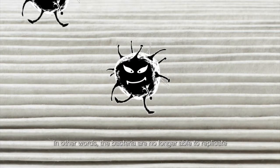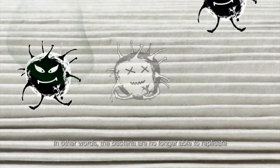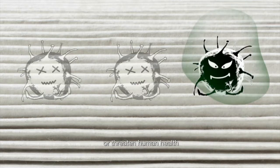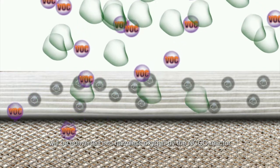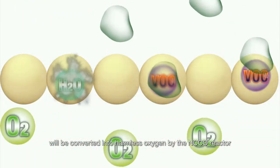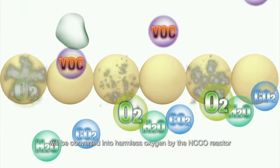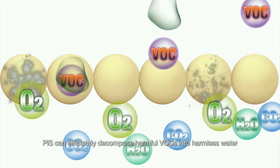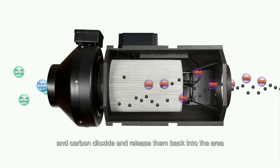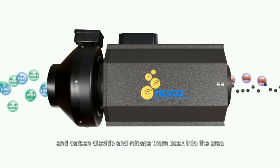In other words, the bacteria are no longer able to replicate or threaten human health. Any excess active oxygen generated by the system will be converted into harmless oxygen by the NCCO reactor. PIS can efficiently decompose harmful VOCs into harmless water and carbon dioxide and release them back into the area.